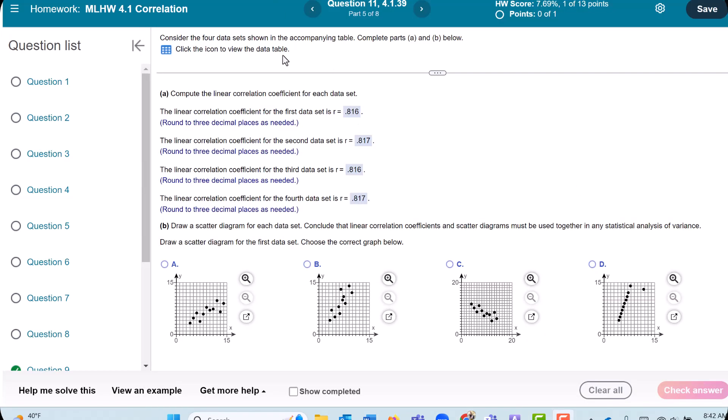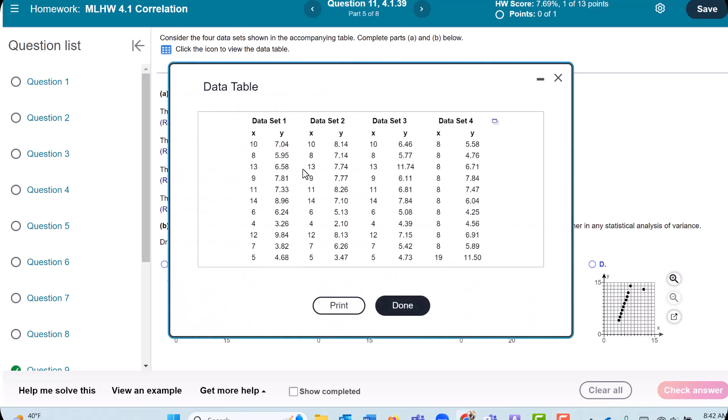So notice that the data sets are different. Looks like the X's are the same for these first three, but the Y's are definitely different here. Yet we got the same correlation coefficient for each one of these.